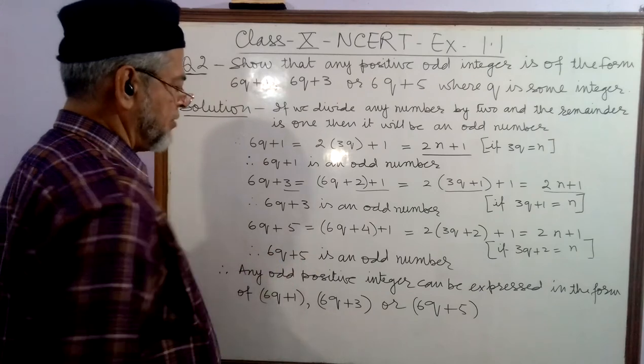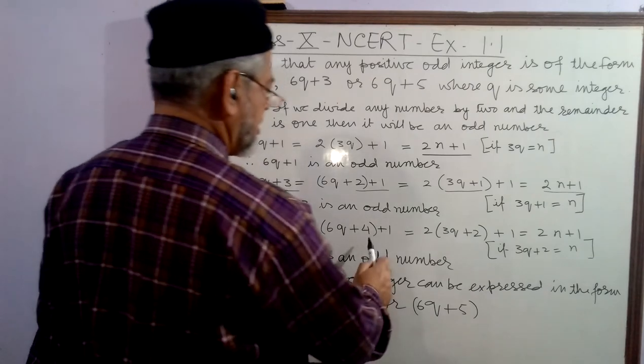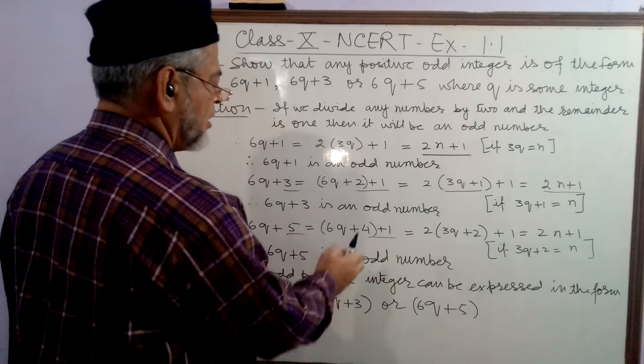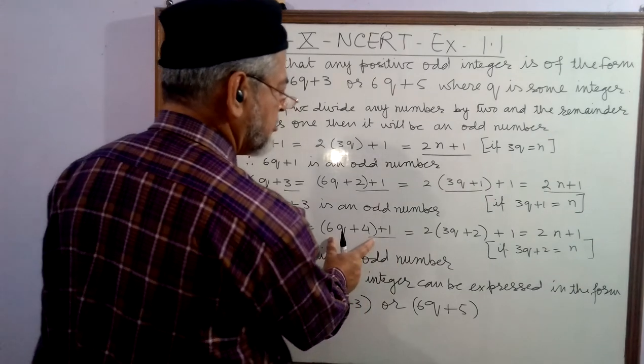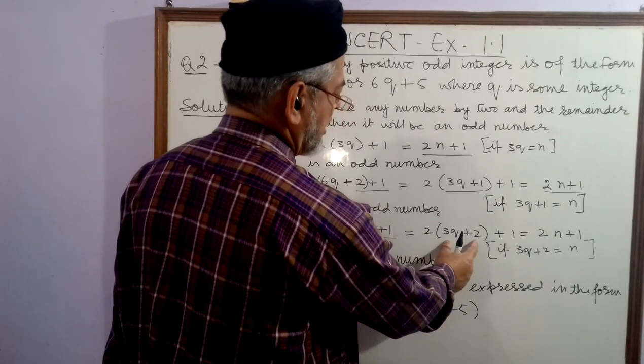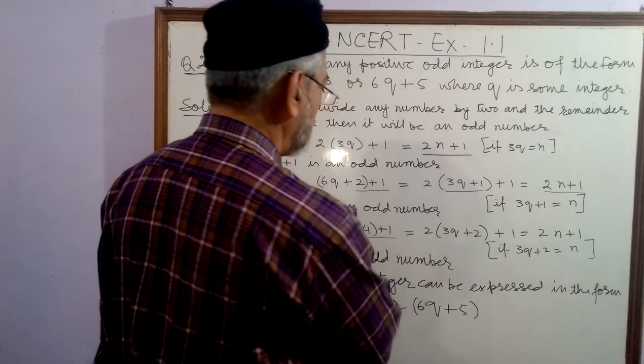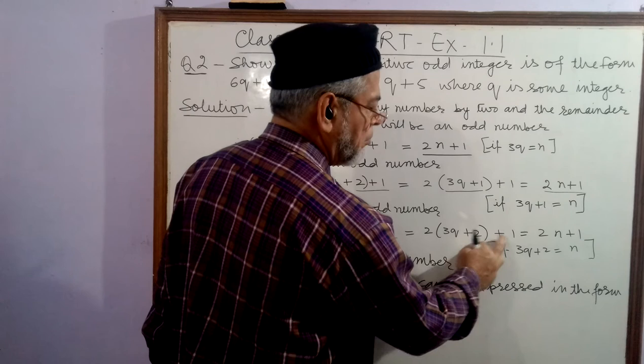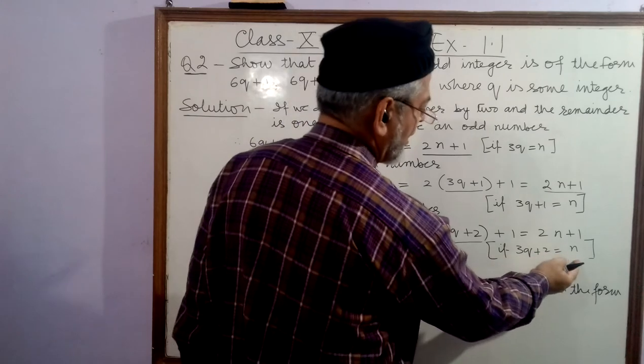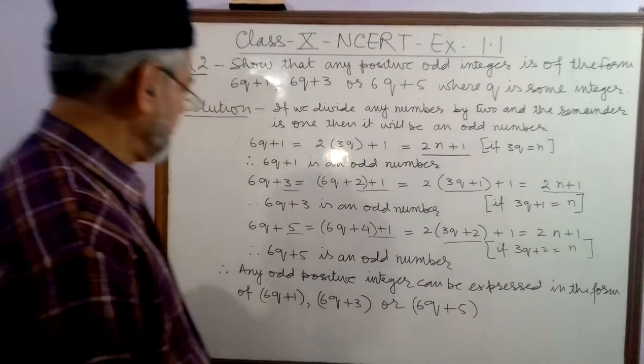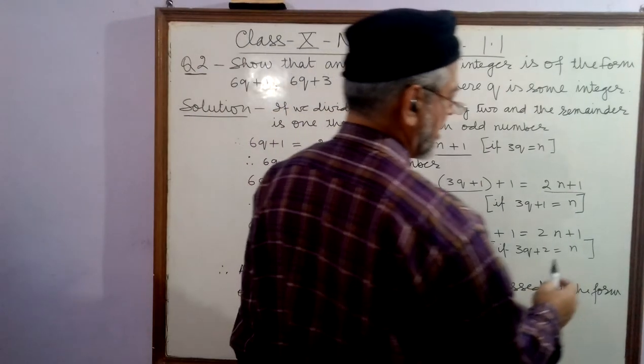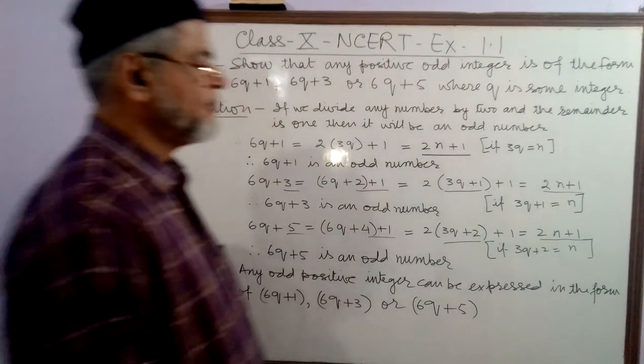Now, we take 6q plus 5. It can be split as 4 plus 1. So, I have changed 5 into two parts, 4 plus 1. From this part, that means 6q plus 4, I have taken out 2. So, it will become 3q plus 2 inside. That means 6q plus 5 equals 2 into 3q plus 2, plus 1. If I replace 3q plus 2 with N, it will become 2N plus 1. Hence, 6q plus 5 is an odd number, because it has converted into the standard form of odd number.